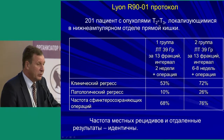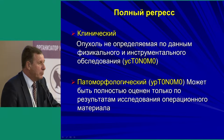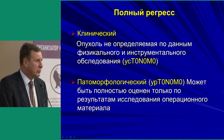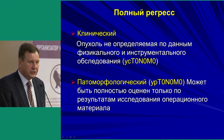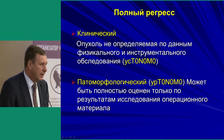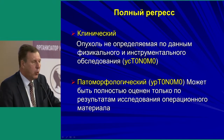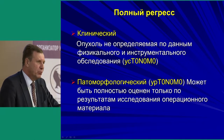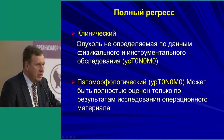Pre-operative radiation with an elongated pre-op interval provided new horizons in the treatment of such patients — it was a considerable revolution. It is important to define our terminology. Complete clinical regression means the tumor cannot be determined based on physical and instrumental examination. Complete morphological regression can only be assessed when we study the surgical specimen. After chemo-radiation, we can speak only of complete clinical regression using modern examination methods — we cannot know if it is complete pathological regression without histology.